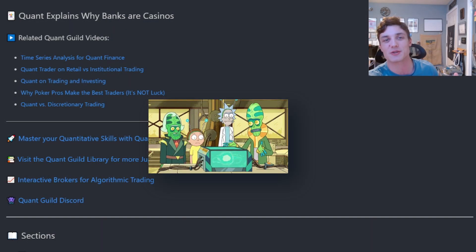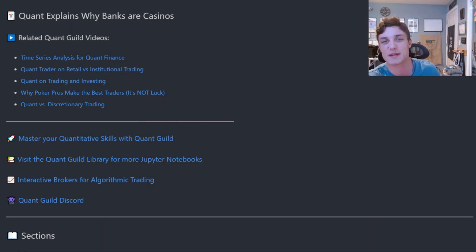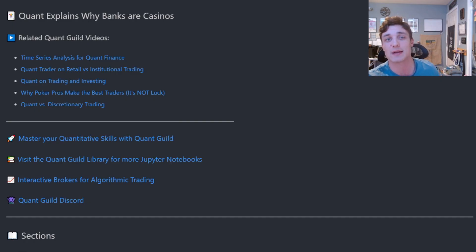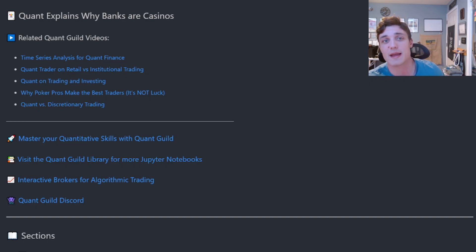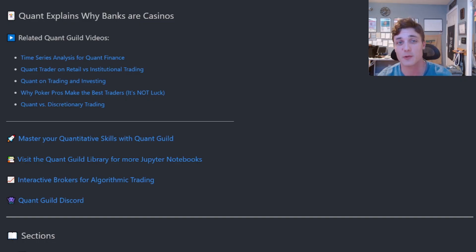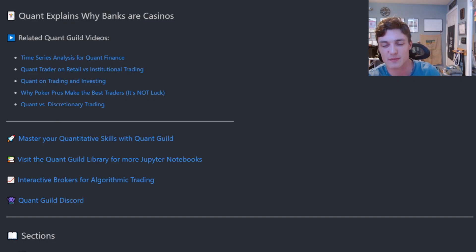Banks are just casinos with extra steps. In this video we're going to talk about the business function of both institutions and see exactly how a casino makes money in randomness and how a bank makes money making a market. We'll talk about the probability and statistics involved and take a look at some animations to really understand how this works.